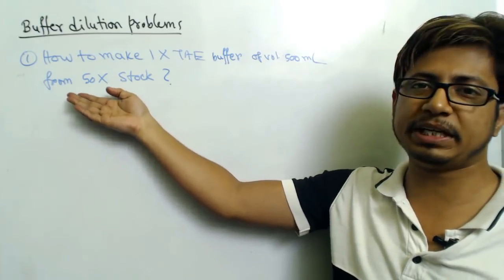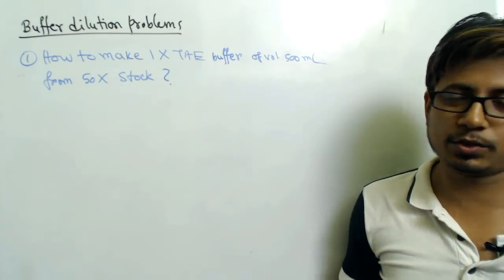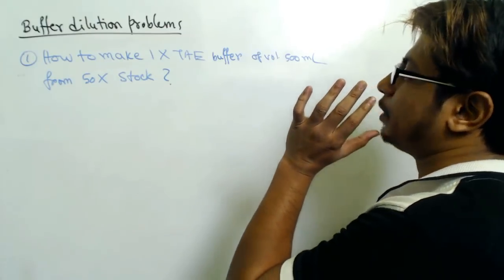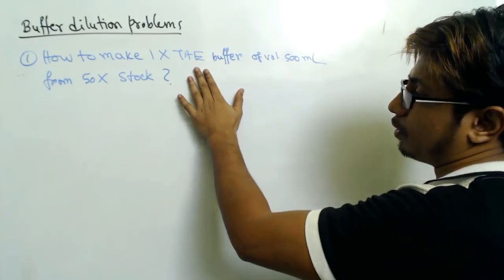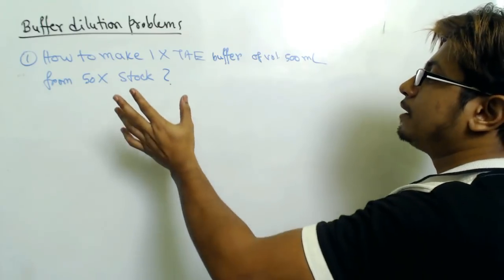We call it 50X, 20X, 30X - different strong buffers. In this case we're talking about TAE buffer, which is a very useful buffer also needed for gel electrophoresis purposes.